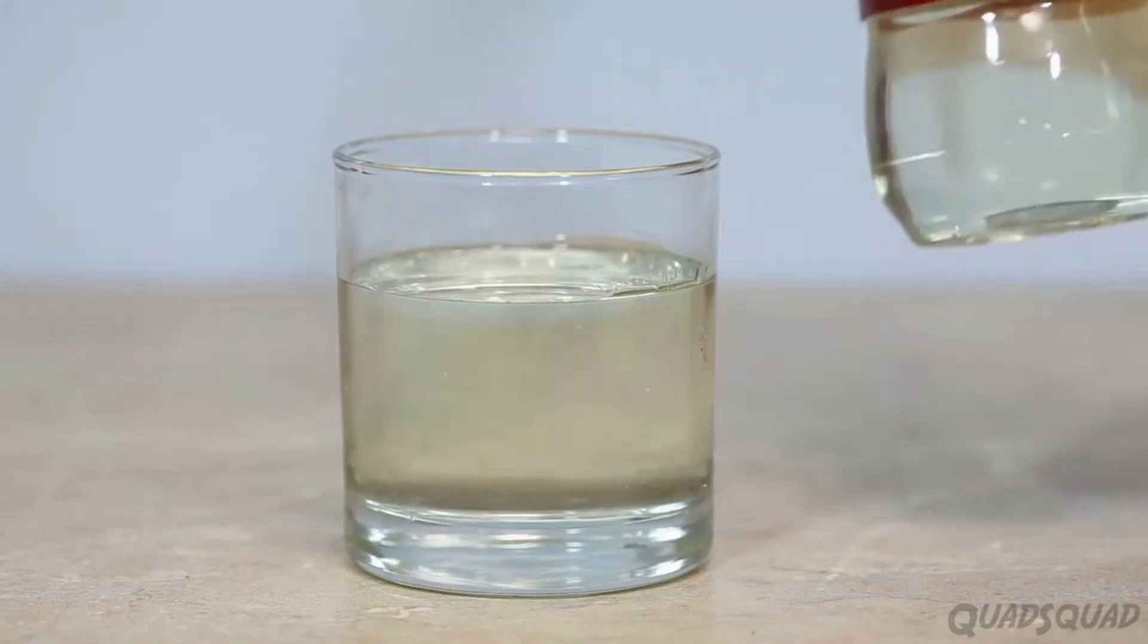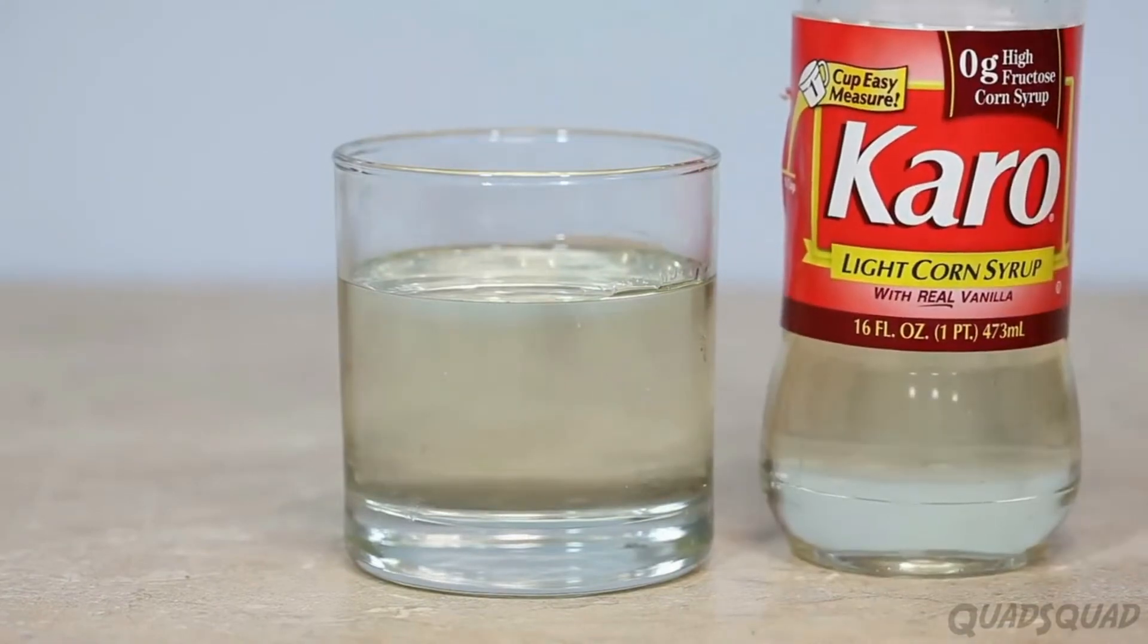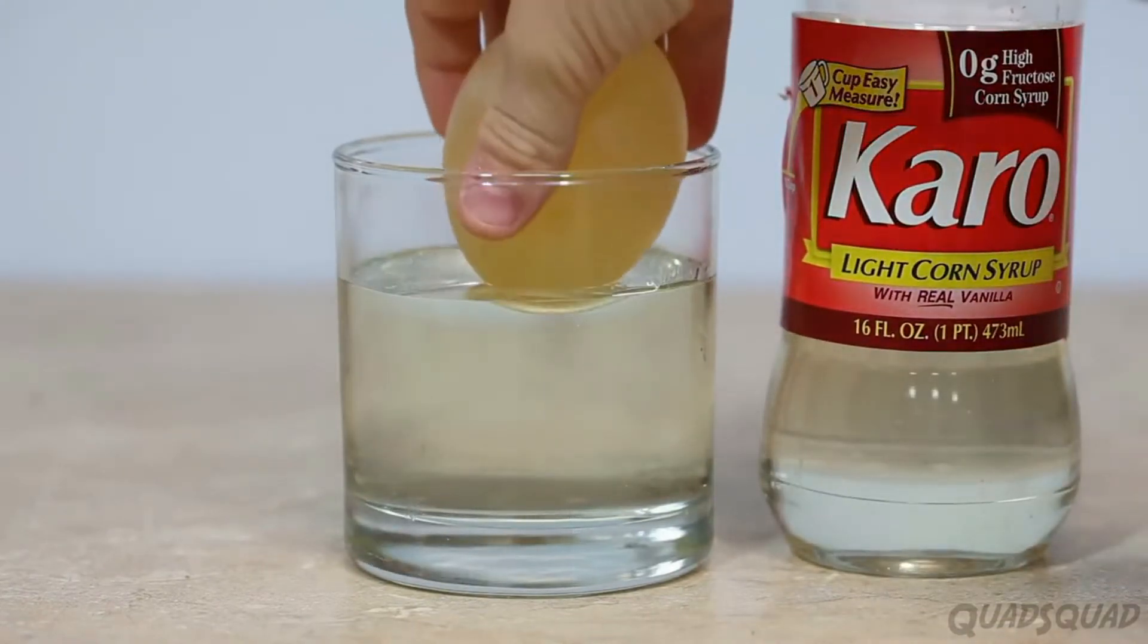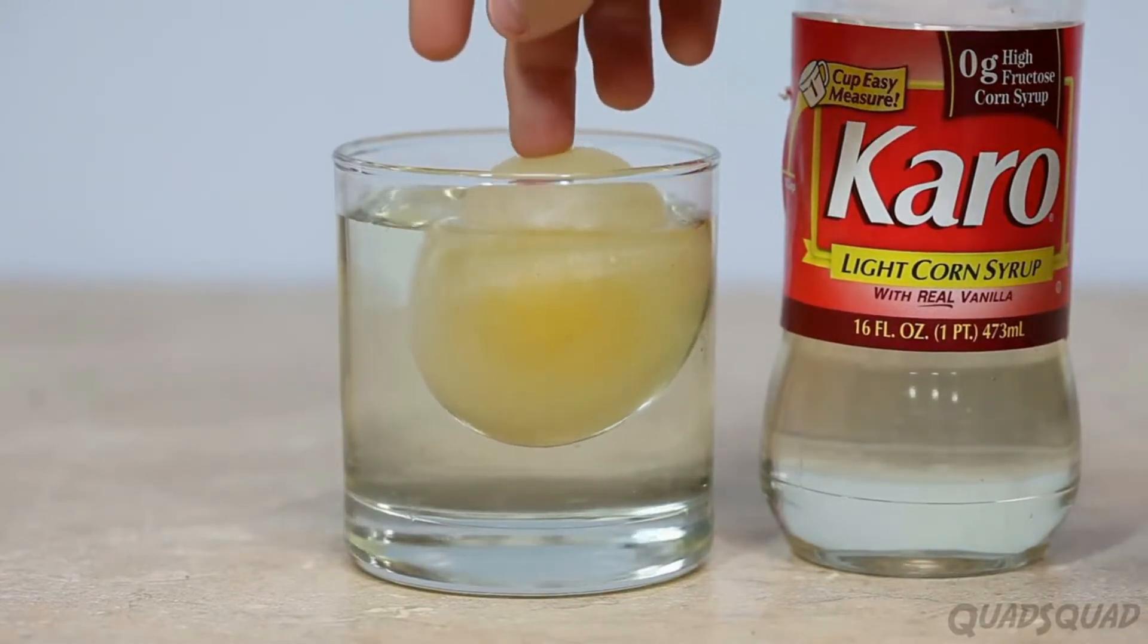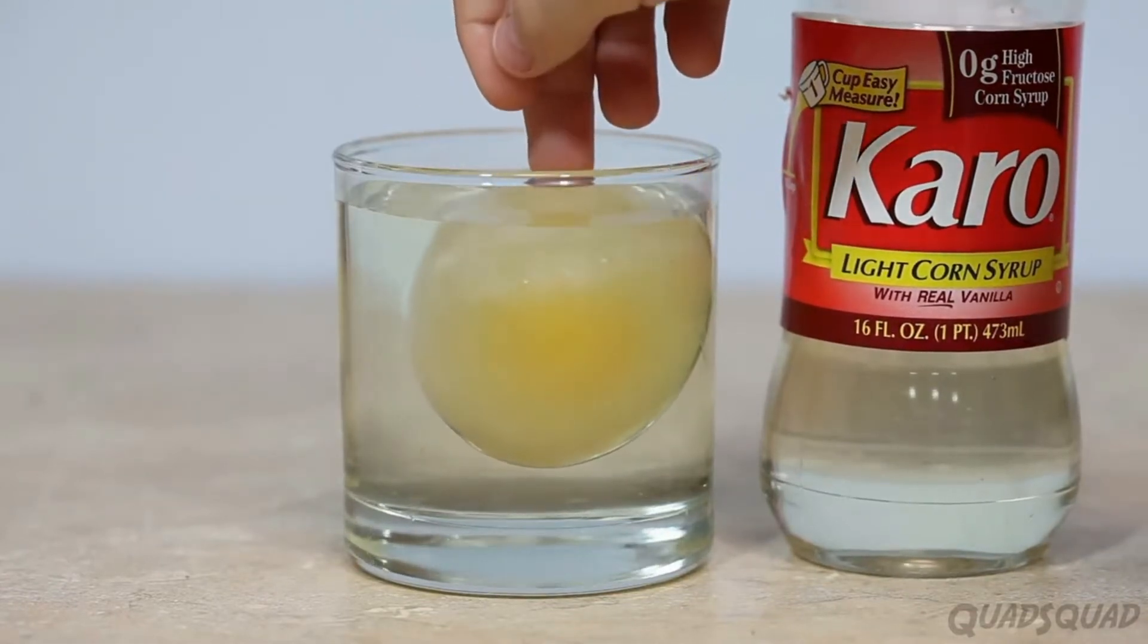Now, we're going to do another one which takes out water with a thicker liquid. We'll use corn syrup for this next part. Remember that corn syrup is a hypertonic solution which has a high percentage of solute. Pour the corn syrup into a cup and add your no-shelled egg.